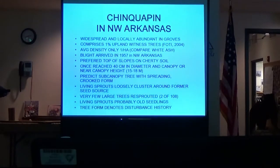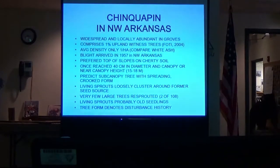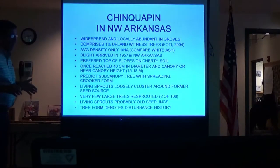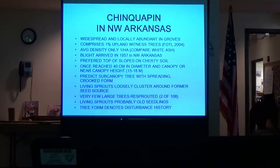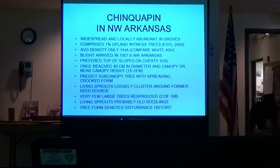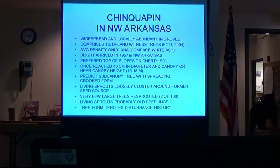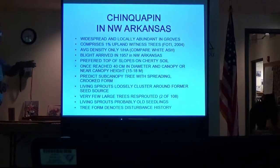The final conclusion is that we've established a number of important facts about what chinkapin is like and where it grew. It was widespread and locally abundant in groves — not really a dominant tree in the forest, but scattered around everywhere and conspicuous enough that you wouldn't miss it. Numerically it was about 1% of the forest; the best analogy is white ash. Average density was only about one per hectare but in groves, so you'd have many hectares without any chinkapin and then one grove with several dozen. It preferred the tops of slopes on sturdy soil — not the crest of the ridge and not the mid-slope, but just where the slope starts to break.